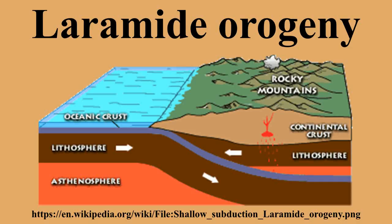Basins and Mountains: The Laramide orogeny produced intermontane structural basins and adjacent mountain blocks by means of deformation. This style of deformation is typical of continental plates adjacent to convergent margins of long duration that have not sustained continent-continent collisions. This tectonic setting produces a pattern of compressive uplifts and basins, with most of the deformation confined to block edges. Twelve kilometers of structural relief between basins and adjacent uplifts is not uncommon. The basins contain several thousand meters of Paleozoic and Mesozoic sedimentary rocks that predate the Laramide orogeny.